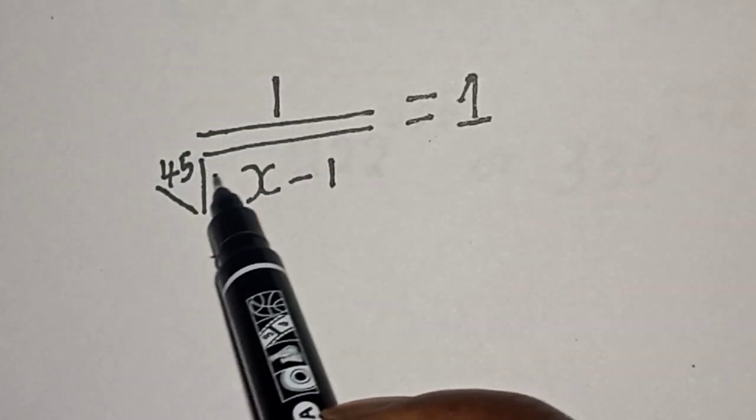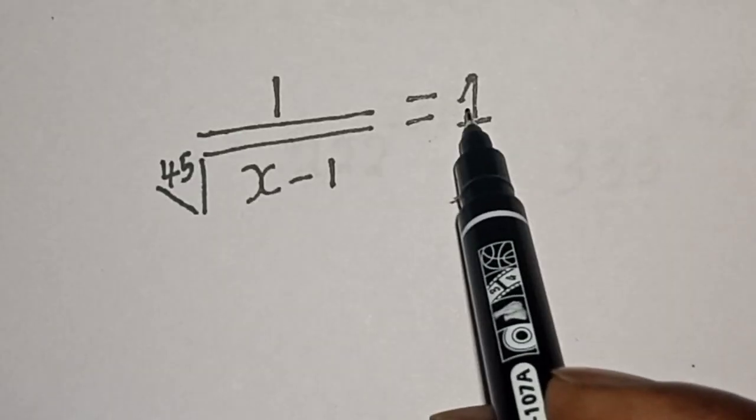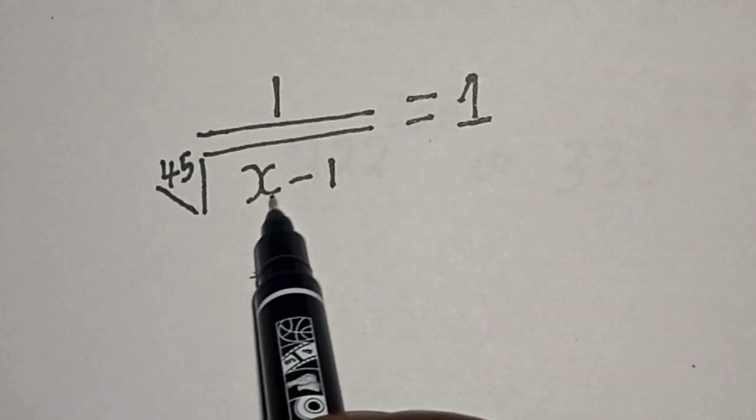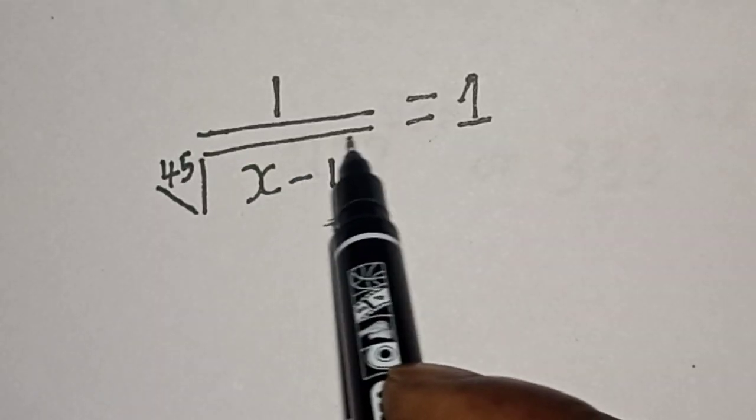1 divided by 45 root of x minus 1 is equal to 1. Hi everyone, welcome to my class. In this class, I want to find the value of x from this equation. But before we proceed,